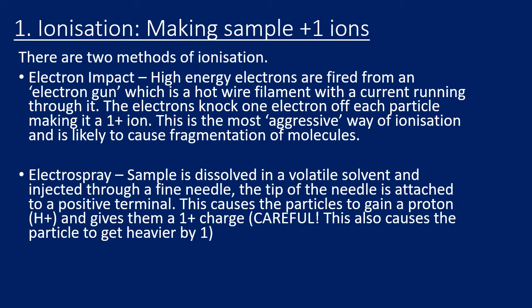The second way to make something positive is to add a proton to it — protons are positively charged — and this is called electrospray. The sample is dissolved in a volatile solvent and injected through a fine hypodermic needle. The tip of the needle is attached to a positive terminal, which causes the sample to gain a proton. The symbol for a proton is H⁺, and this gives the sample a +1 charge.